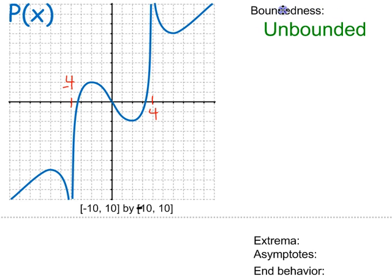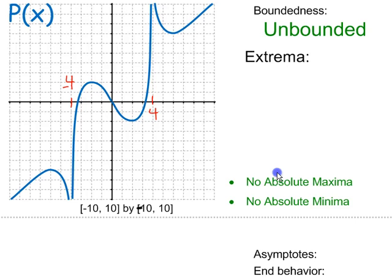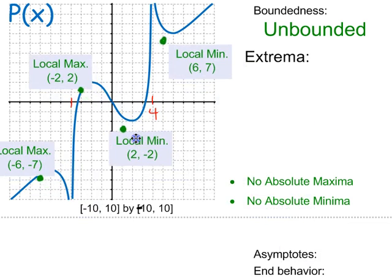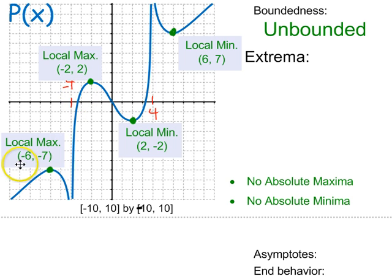Extrema — remember that extrema is the term for minima and maxima. Do you see local minima, local maxima? How many do you see? Do you see absolute minima, absolute maxima? Well, I would say there are no absolute minima or maxima, because this graph just goes infinitely low and infinitely high, so there can be no absolute high or low point. However, there are a number of local extrema, and here they are. Remember that, unlike your book, I really would like to give x and y values for extrema, and since we are giving points when we're talking about extrema, those parentheses are clearly xy coordinates, they are not intervals.